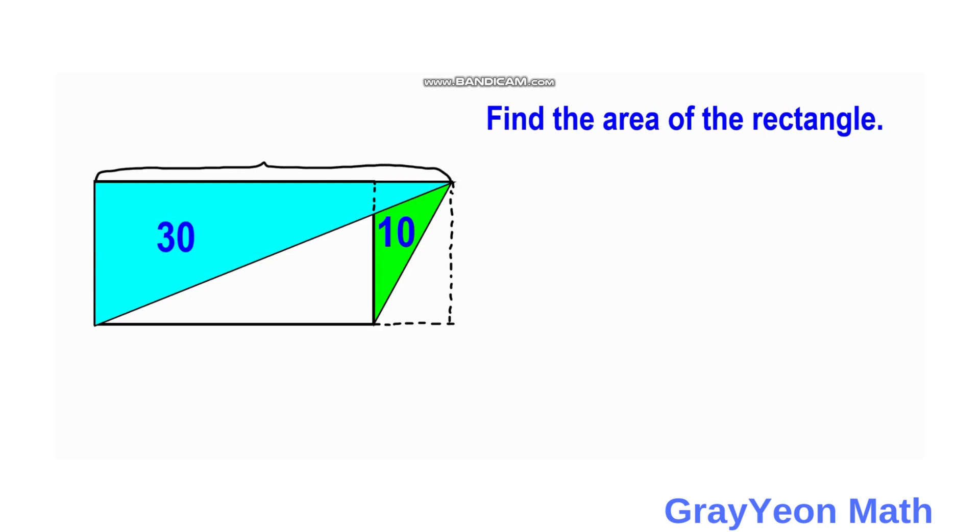And if it is given that the area of this triangle is 30, then the area of the rectangle should be twice that of the triangle, because the triangle is half of the rectangle. So the area of the blue rectangle is equal to 2 times 30, which is equal to 60 square units.